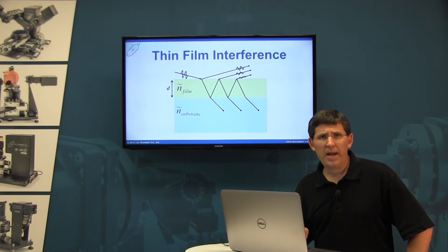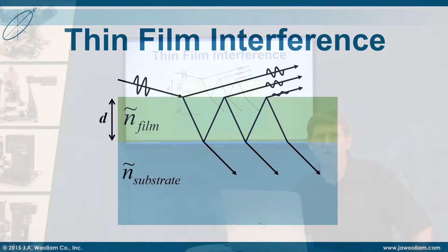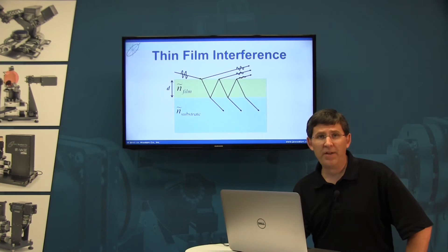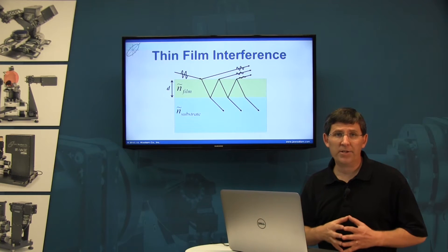Now data from a thin film will exhibit interference features if light is able to travel through the film. That light that travels through the film will rejoin the light reflecting from the surface, and the interference between those light rays will cause peaks and valleys in your data.